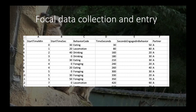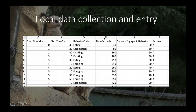The first column is the start time in minutes. In this toy example, the first behavior I observed was at 30 seconds and the animal was eating, so the time in seconds is 30 seconds. Then if we move to the next behavior, they started locomoting or walking at one minute 20 seconds, so the cumulative time in seconds is 80 seconds.